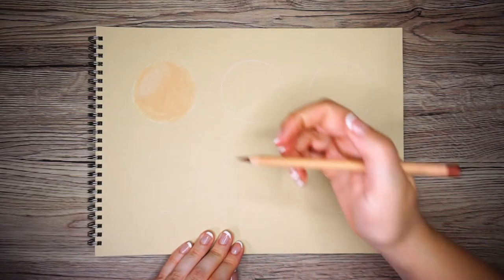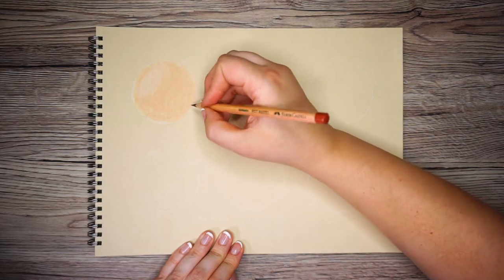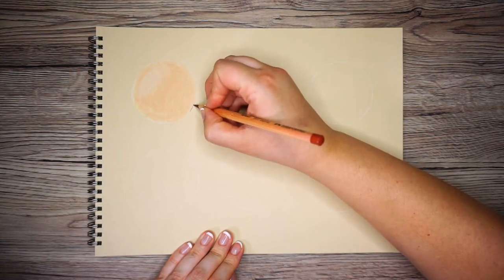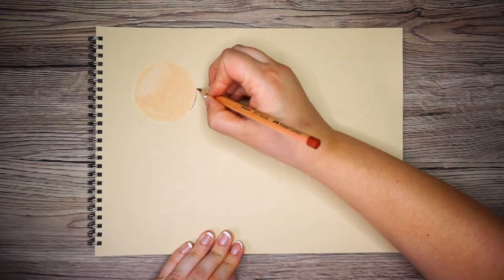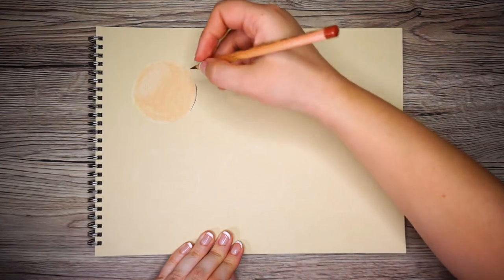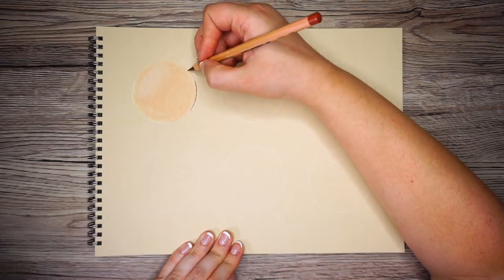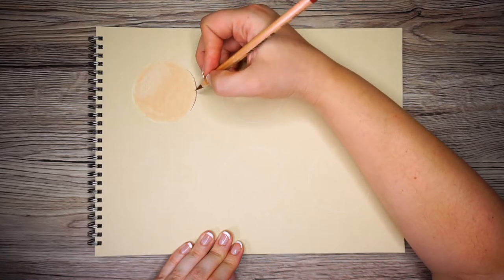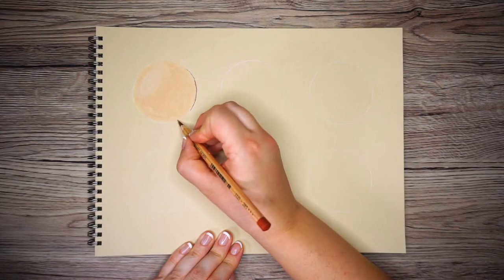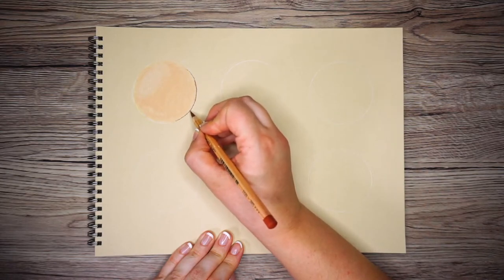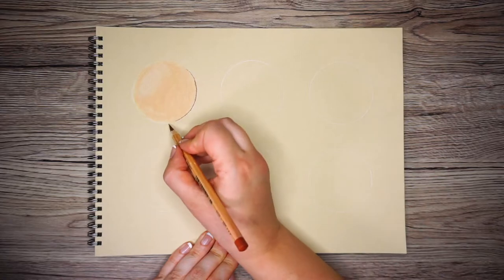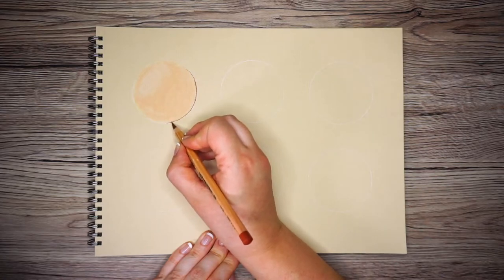And now to add my shadow, I'm just going to use the brown. So I'm just going to draw a line around the edge and then I'm going to graduate it up, and then I'll blend it out.